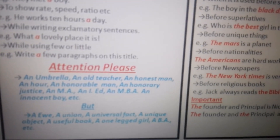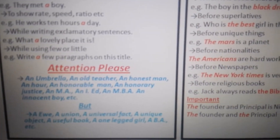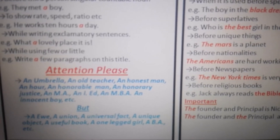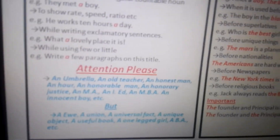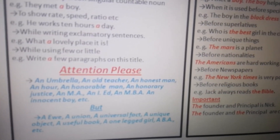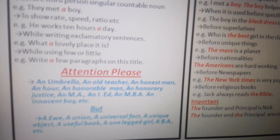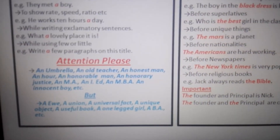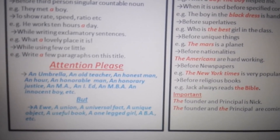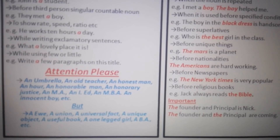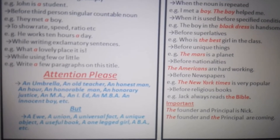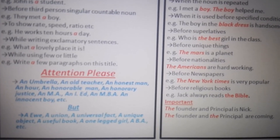An honest man — 'honest' produces a vowel sound; even if there is 'h', it is silent there, that's why 'an' is used. An hour — even if there is 'h', 'hour' produces a vowel sound, that's why 'an' is used. An honorable man — 'honorable' produces a vowel sound, that's why 'an' is used. An honorary justice — again the same kind of pronunciation.